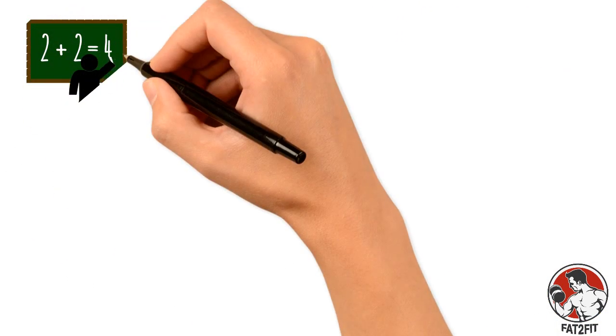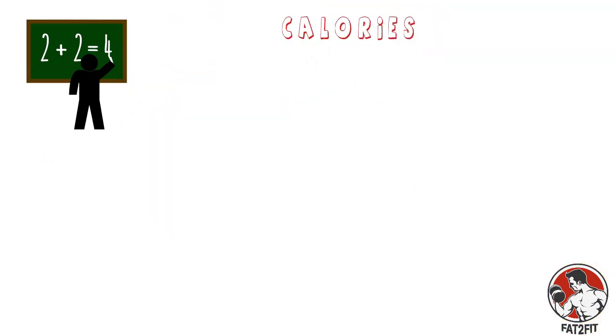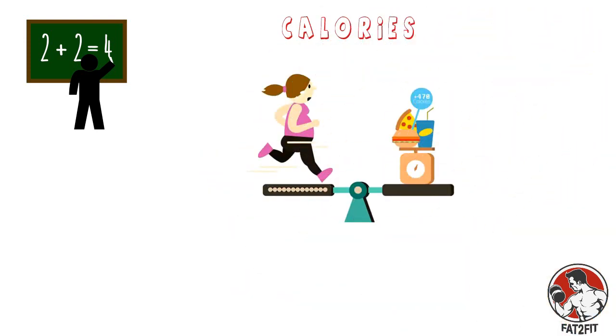Before diving into the mathematical concept, let's understand what calories are. A calorie is a unit of energy, and in nutrition, calories apply to two independent concepts.